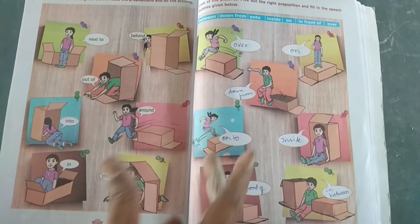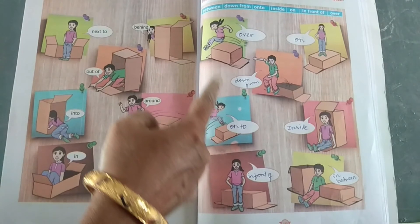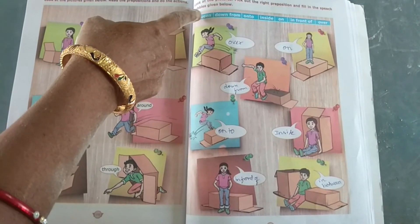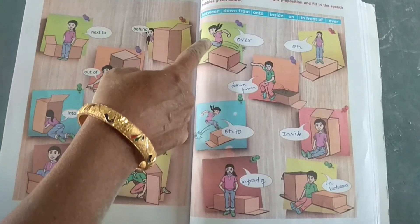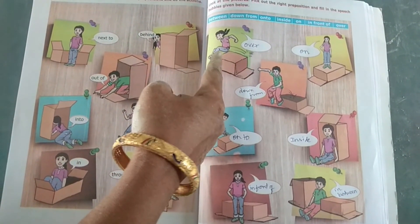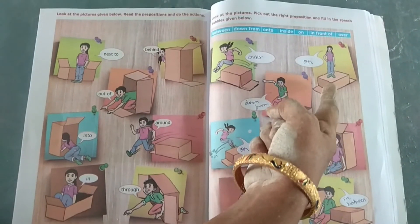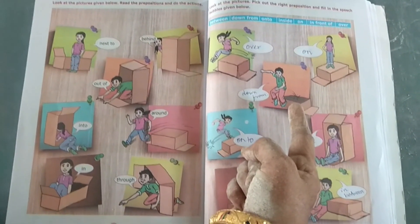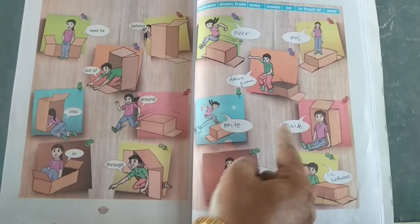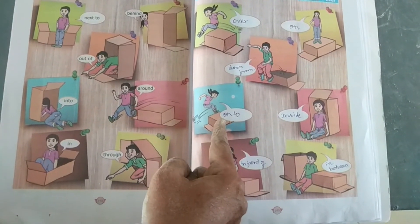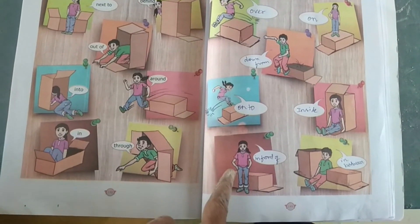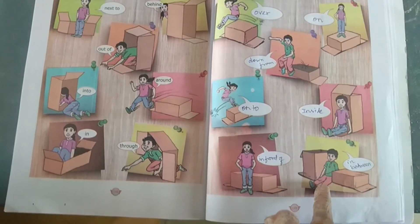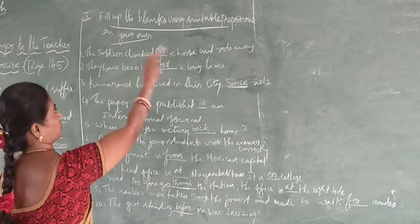Now they have given you following exercises. You have to write. They have given some preposition words, you have to pick from it and fill these pictures. Here the girl is running over, she is standing on the box, this boy is jumping down from that box, she is jumping onto the box, she is sitting inside the box, she is standing in front of the box, this boy is sitting in the box. The field of lands using suitable prepositions on your own.